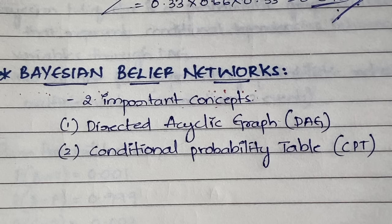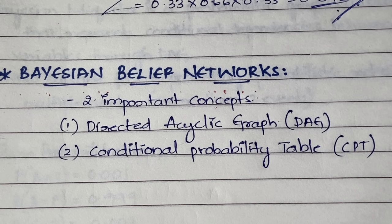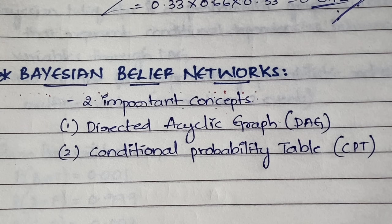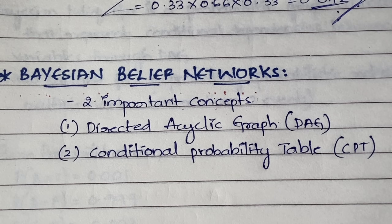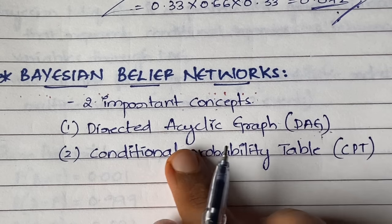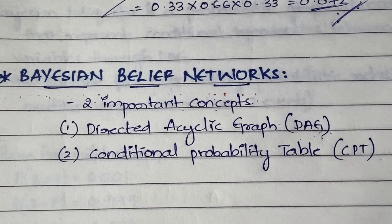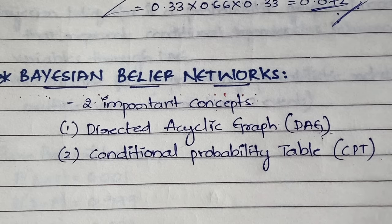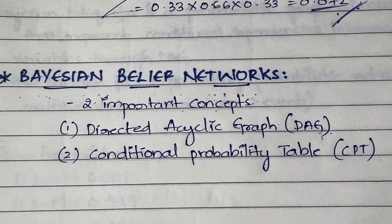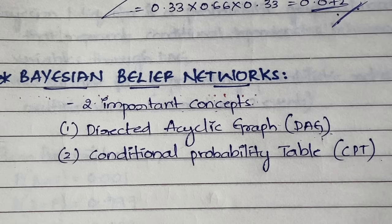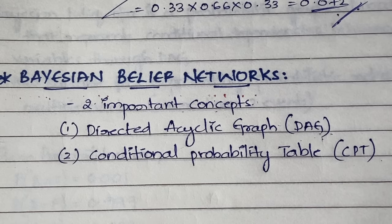Before learning about Bayesian Belief Networks — what they do and their purpose — we will first understand two important concepts involved: the Directed Acyclic Graph, called DAG (D-A-G), and the Conditional Probability Table, called CPT. These two concepts are very simple, so don't get confused or nervous. I'll explain what DAG and CPT are, then explain Bayesian Belief Networks with an example.